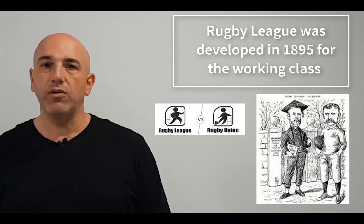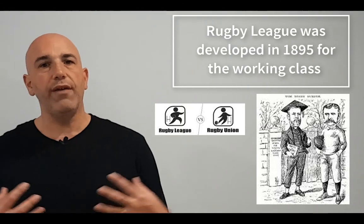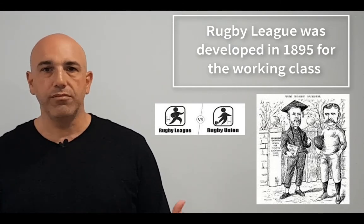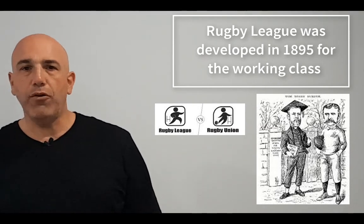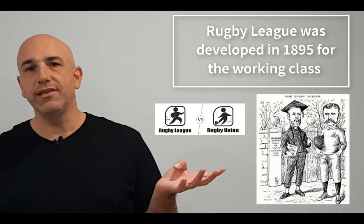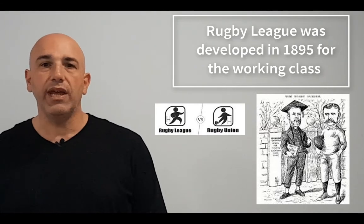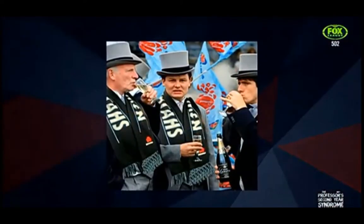A lot of the working class protested about this and started developing their own sport — that sport is now called rugby league. A group of people broke away from rugby union, changed some of the rules, and that's how rugby league began. Rugby league is still considered the working class sport. The difference is visible today — rugby league has themed rounds such as women in league round, indigenous round, or retro round, whereas rugby union is perceived differently in terms of its demographic.